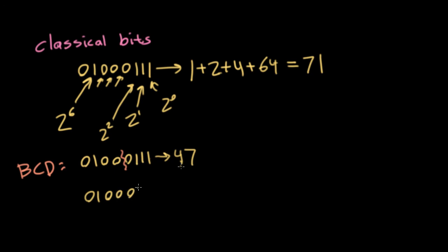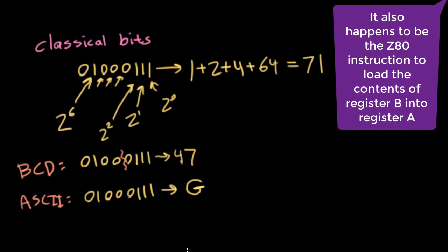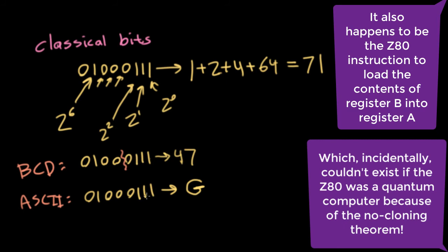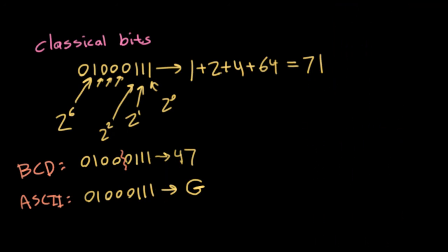But here's the thing — maybe this isn't a number at all. Maybe this represents something like a character in the ASCII character set. This number, which interpreted as a usual integer would be 71, in the ASCII character set represents the letter G. This interpretation of that bit string is just as valid as interpreting it as a binary integer or as binary coded decimal. Again, here we're not thinking about these things as numbers; we're thinking about them as symbols. These symbols 0 and 1, and a certain string of them, represents the letter G.